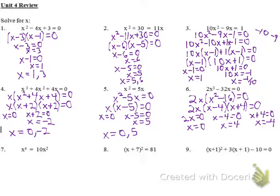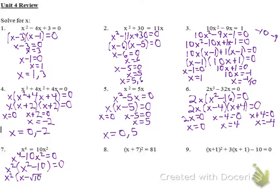Number seven, get everything to the same side: x to the fourth minus 10x squared equals 0. Factor out an x squared, leaving x squared minus 10 equals 0. That factors as x minus the square root of 10, times x plus the square root of 10, equals 0. So x equals the square root of 10 and x equals negative square root of 10. And of course x squared equals 0 gives x equals 0 as well.